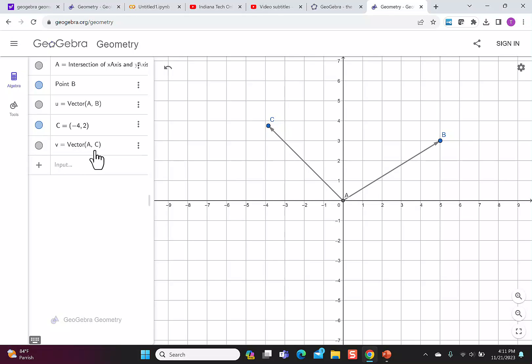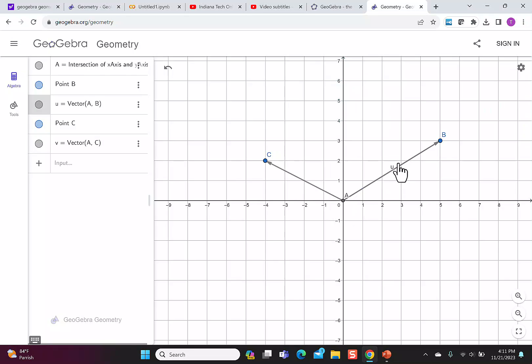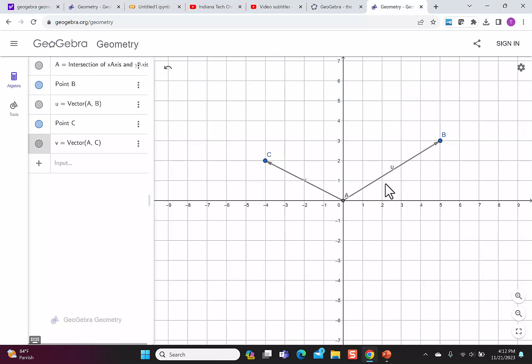If you want the names of the vectors to show up on the graph, then you can go to the settings. And then where it says show label, it'll show the name. So now you can see I have U on my vector U. Let's do the same thing for V. So settings, let's show label, and now I can see both vectors.